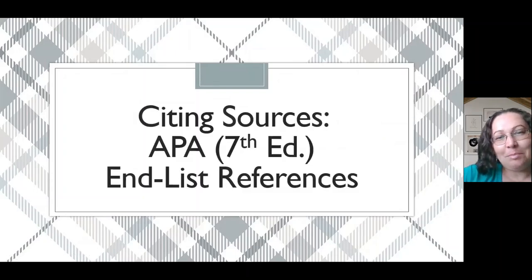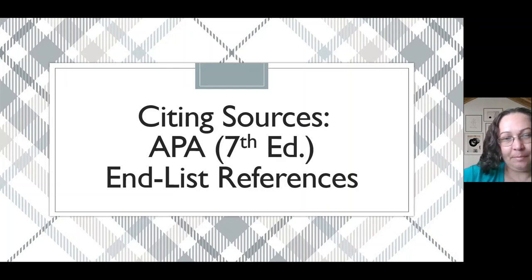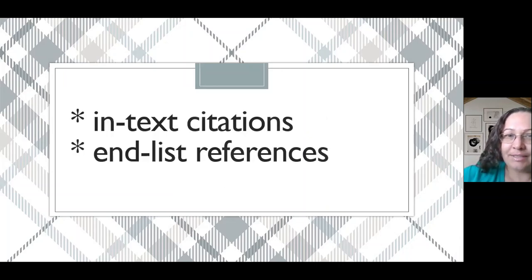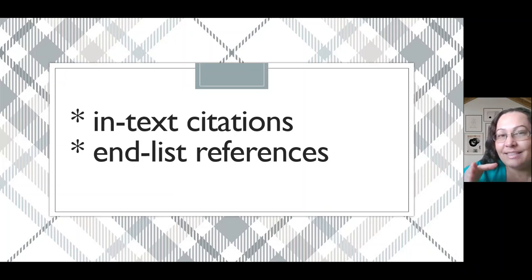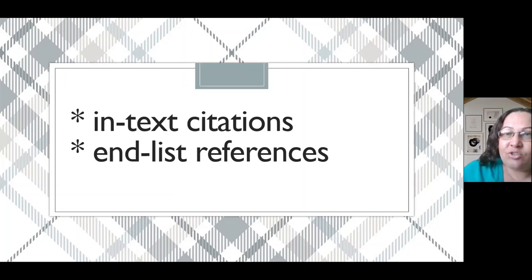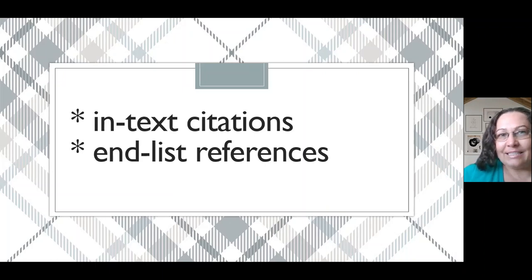Greetings, everyone. Today we're going to talk about citing sources by following APA style 7th edition, more specifically, entering end-list references. However, to talk about citing sources, we need to remember that when we use information coming from other sources, that information is going to appear in two places. First, we're going to provide a succinct reference to the source in the text where we are writing and making reference to that source. And the second time, it is going to appear at the end of the paper on a separate page, which we call End-List References. There, in End-List References, the information is going to be detailed so that any reader is able to access the original text and educate himself or herself more on that reference.